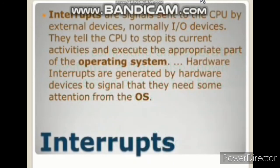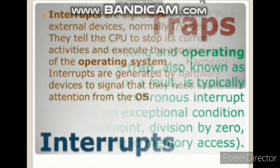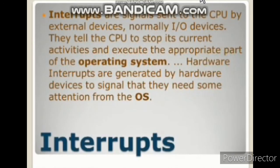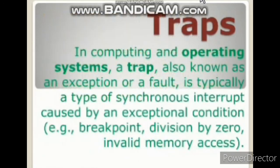To repeat the conclusion: interrupts are the signals that are generated by the I/O devices to get the attention of the CPU. But traps are the signals that are generated by the CPU itself, when any program does not make any sense to the CPU — it simply generates the trap. Here is the interrupt service routine, and here is the trap service routine.